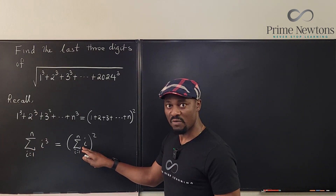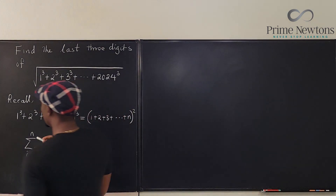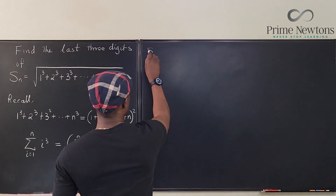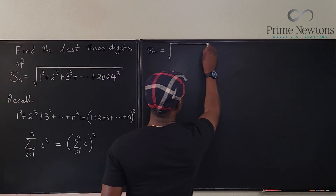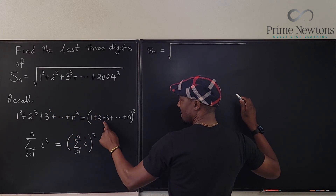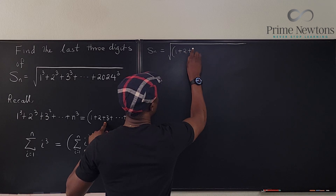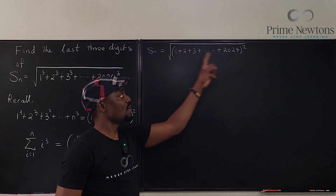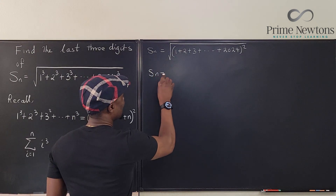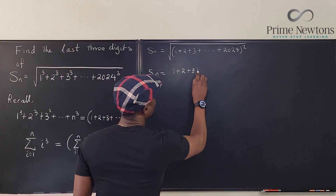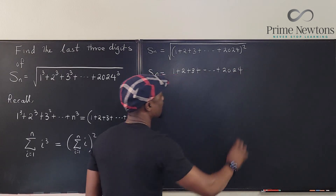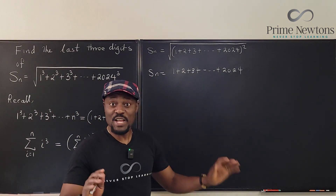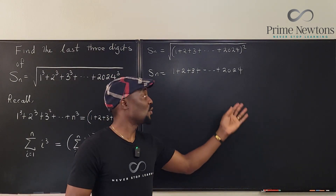Now, the sum we're looking for is the sum of the first n cubes. We can write it as the square root of (1 + 2 + 3 + ... + 2024)². When you take the square root of a square, all you have is the sum itself. So the whole expression simplifies to just 1 + 2 + 3 + ... + 2024. You could sit down and add these up 2024 times, but there's a better way.